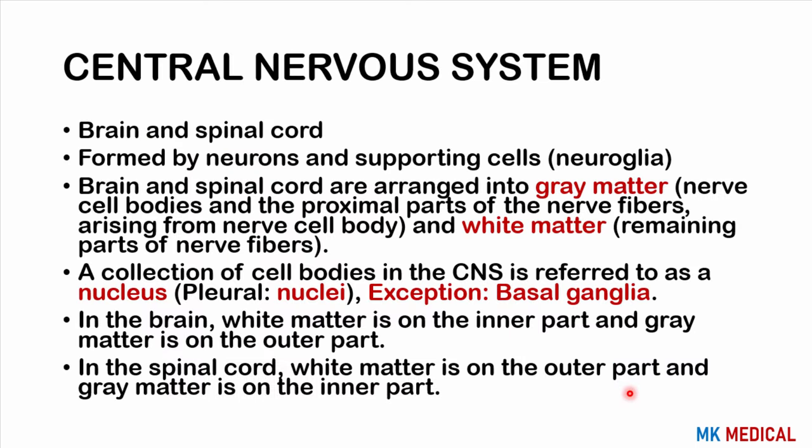We shall talk about each of the parts of the central nervous system as well as the peripheral nervous system, so you get an overview before we dive into discussing the sensory system. Then we shall move on to the motor system and some higher function centers in the brain. In the central nervous system, you have the brain and the spinal cord.